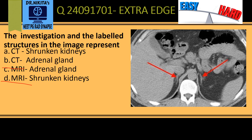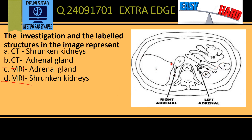Next we have to identify what the labeled structures represent. Let us have a look at the schematic diagram first. So that's the liver on the right side. This is the aorta going through the diaphragmatic opening. So that's the right diaphragmatic crus, and this is the left diaphragmatic crus.